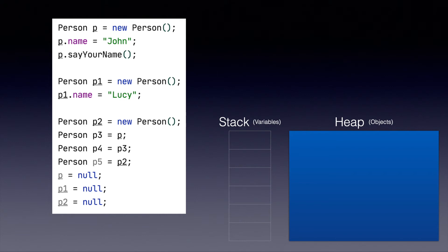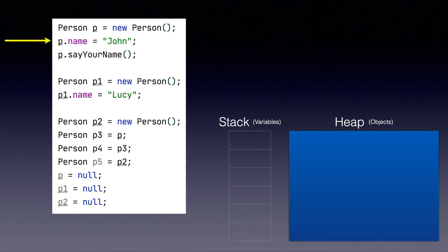As I mentioned previously, we still have stack and heap. On the left-hand side, I have the image of the code I have just written. When the code starts — we have already seen when person p is created and we assign the name of the person as John — the heap and stack looks something like this.